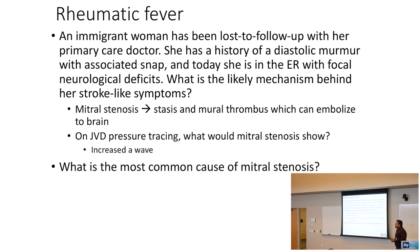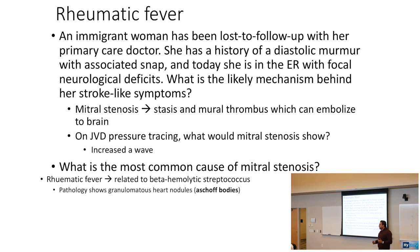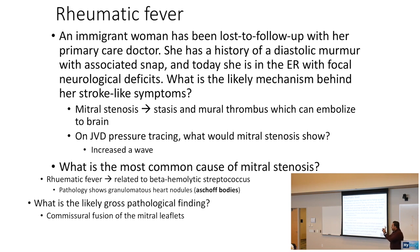The most common cause of mitral stenosis is rheumatic heart disease, related to beta-hemolytic strep infections. Pathology shows granulomatous heart nodules called Aschoff bodies. The gross pathological finding is commissural fusion of the mitral leaflets, giving a fish mouth appearance.